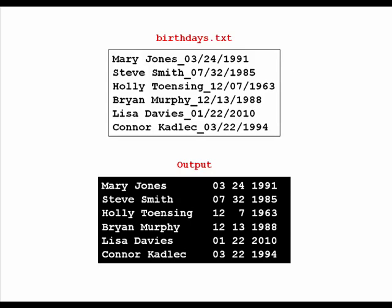Now let's take a look at the file we're going to be reading. It's basically a file of birthdays where each line begins with a person's first name and last name, and also contains their birth date. Because the names contain spaces we're not going to use spaces as delimiters between the names and the birthdays. We have an underscore character being used as a delimiter, so when we read the file we'll need to take that into account.